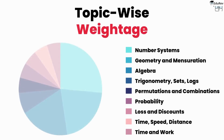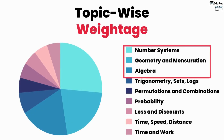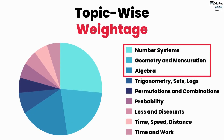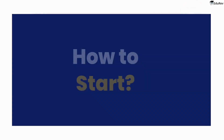Additionally, when it comes to topic-wise weightage, number systems, geometry, and algebra contribute to more than 60% of the weightage in the QAN section. By mastering these topics, you will be able to score above the 95th percentile in this section.